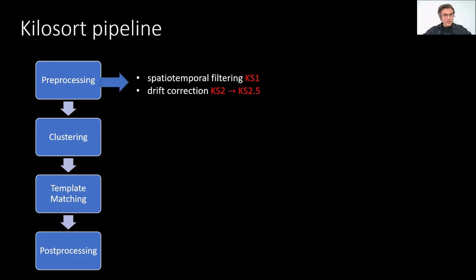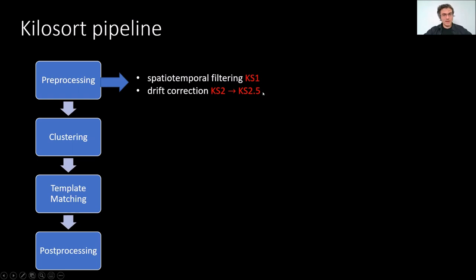Preprocessing involves two steps. First, the spatiotemporal filtering — that's been there since the beginning, since Kilosort 1. Then there's the drift correction step that corrects for vertical motion of the probe throughout time. That's been one of the main things I've been working on to update Kilosort over the past several years. We had a version of this in Kilosort 2; we have a completely different version in 2.5, and I'll only tell you about the 2.5 version today.